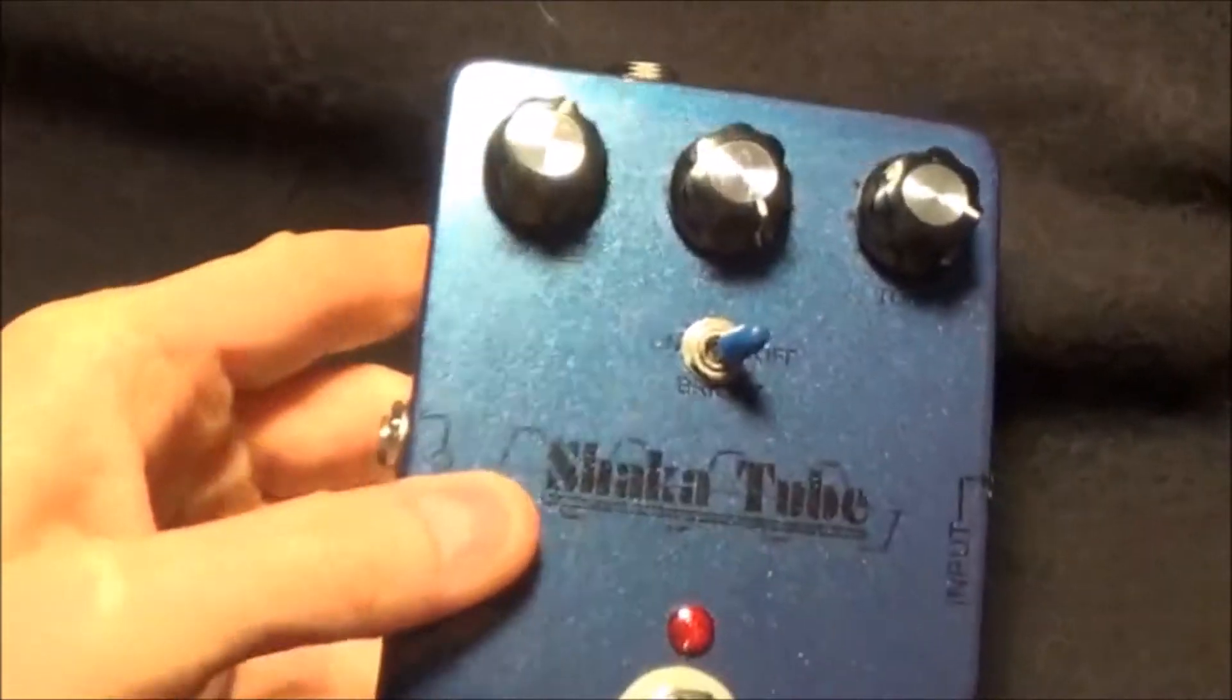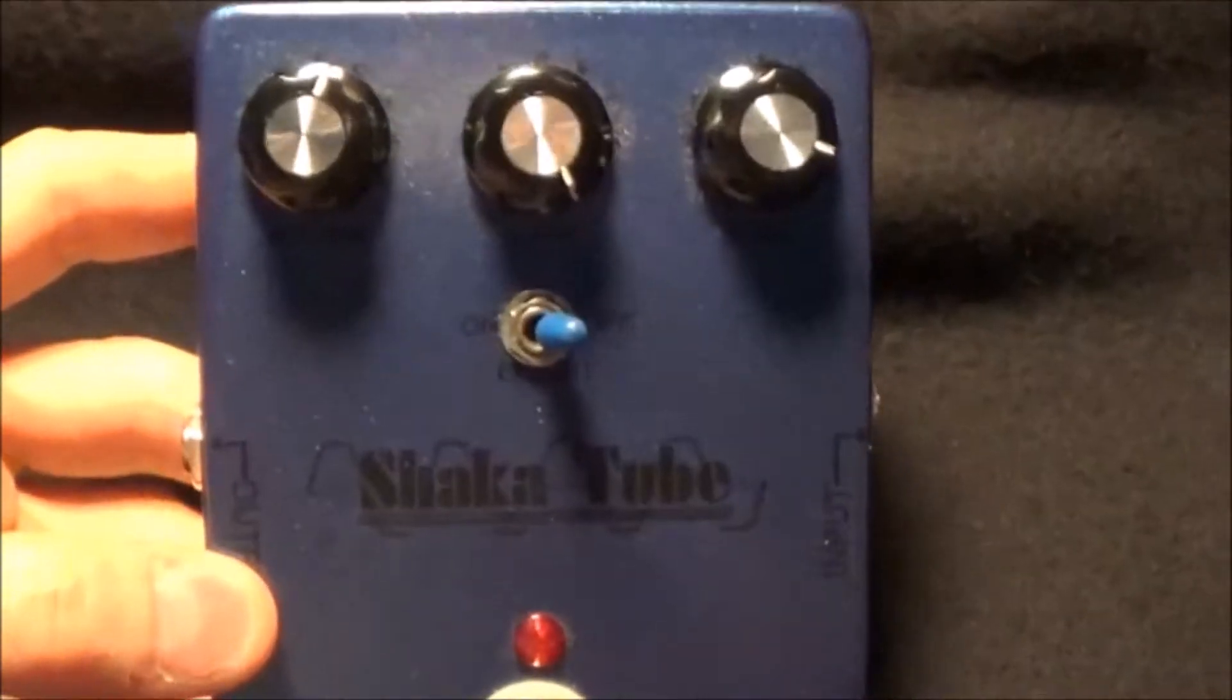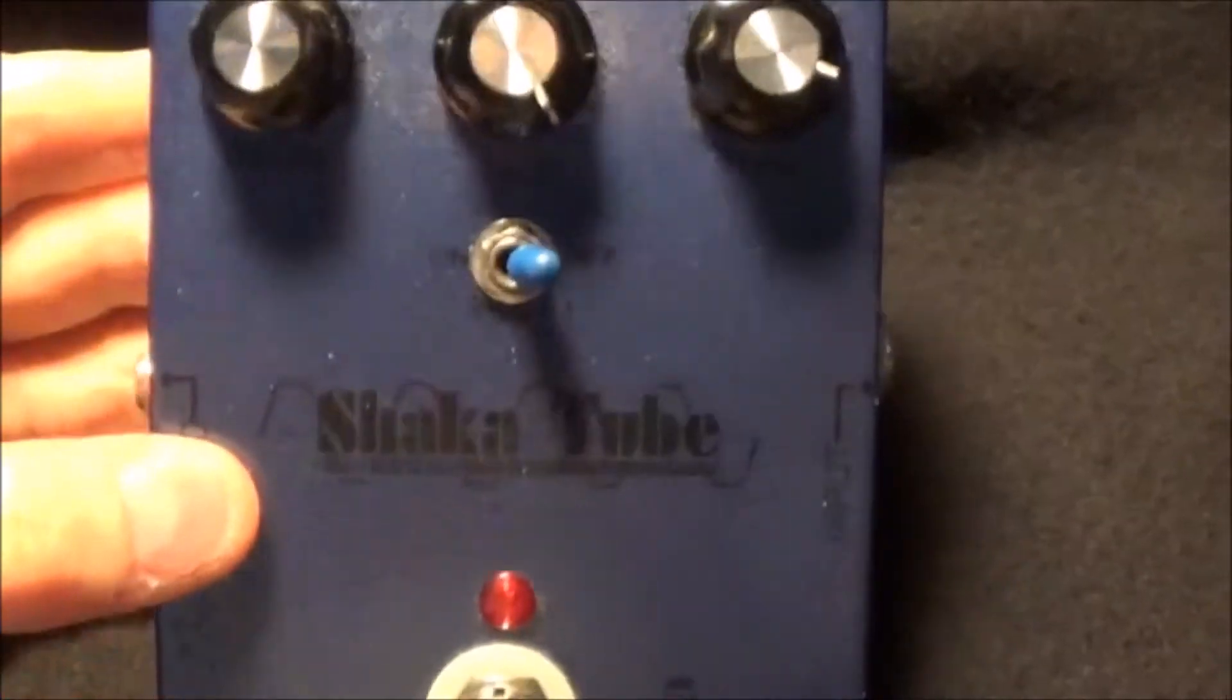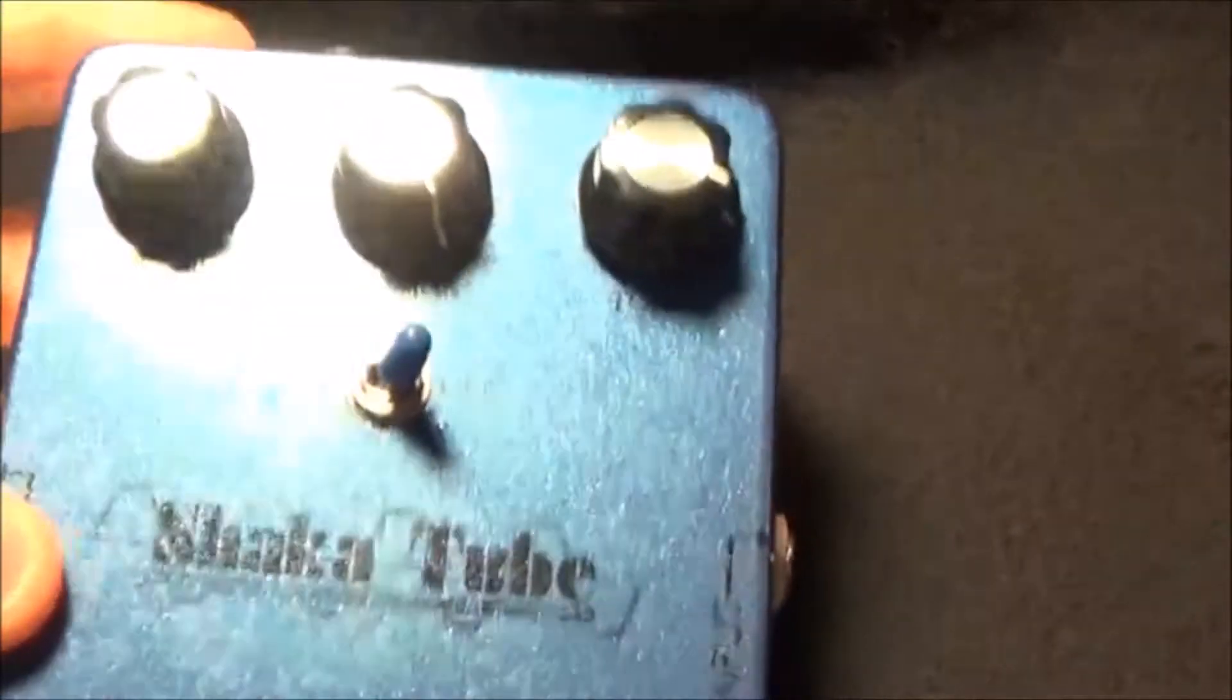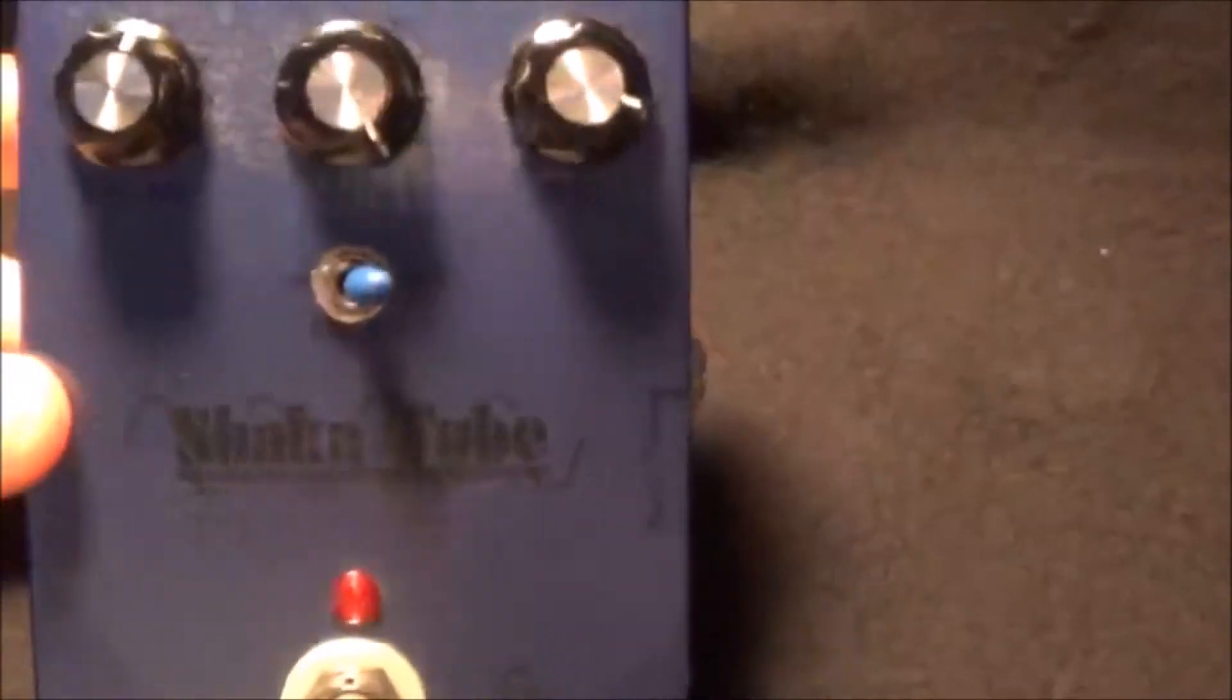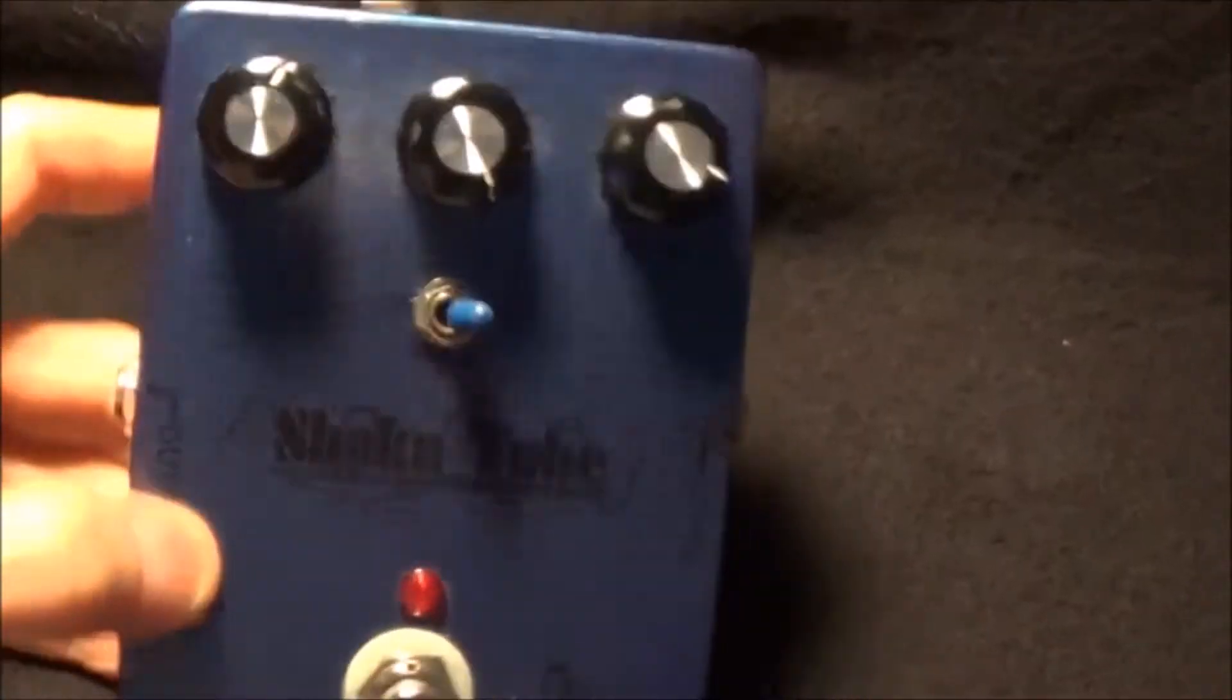One was that I was able to get my preamp tube inside of here with the usual way I like to have things laid out. I like to have volume, gain, tone, or something like that. I like to have these Hammond 1590BB boxes in this kind of format as opposed to being this way. I just like it better.